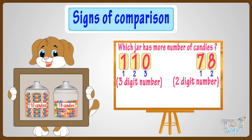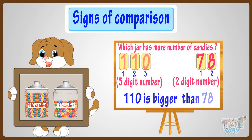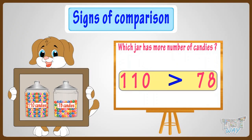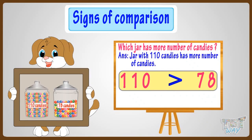Hence, one hundred and ten is bigger than seventy-eight. We represent it like this. So the jar with one hundred and ten candies has more number of candies.